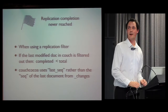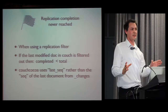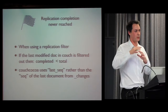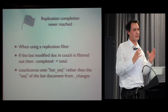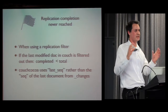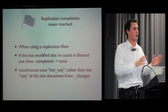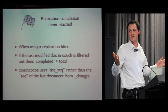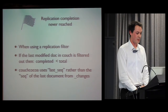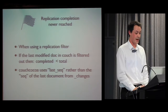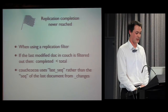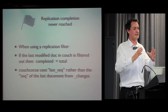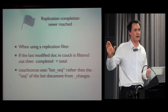The last bad thing I want to demonstrate: replication not completing. Normally when completed equals total, you've finished replication. But if you're using a filter, that doesn't always work — and figuring this out cost the business a lot. If one of the documents is filtered out and it happens to be the very last document Couch needs to replicate, you'll never reach the completed-equals-total state. It will always pull up one short.